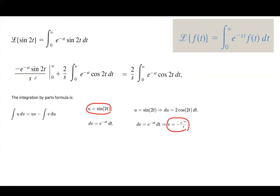This can be written as 2 divided by s times the improper integral of e to the power negative st cosine 2t. Remember that if you plug in infinity, e to the negative power goes to 0, and if you plug in 0 you get sine of 0, which is also 0. So the boundary terms disappear and you end up with 2 over s times the improper integral of e to the power negative st cosine 2t dt. The condition is that s is positive.